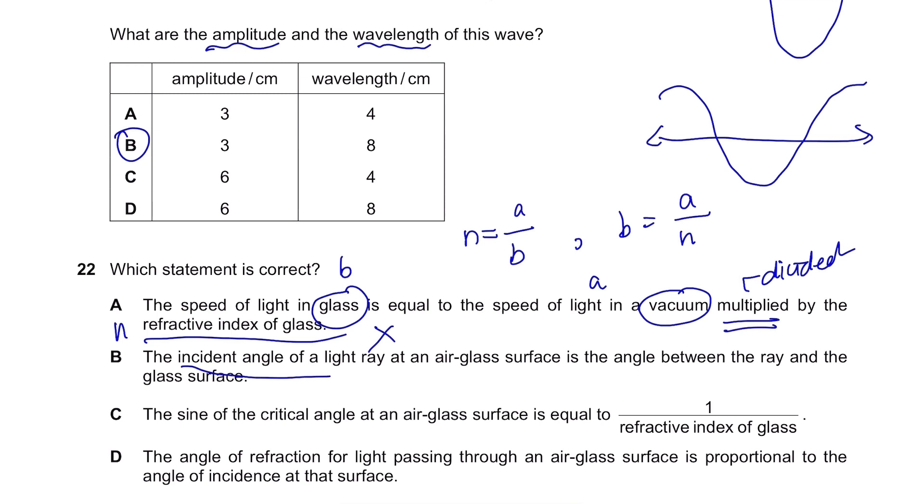The incident angle of a light ray at an air glass surface is the angle between the ray and the glass surface. No, the incident angle is the angle between the ray and the normal line, which is perpendicular to the glass surface. If this is the glass surface, this is the normal line. This is the incident ray, it's the angle over here between the incident ray and the normal. The sine of the critical angle, which is sine c, at an air glass surface is equal to 1 divided by refractive index of glass. Yes, this is correct, this is the exact formula.